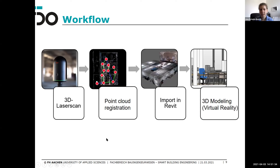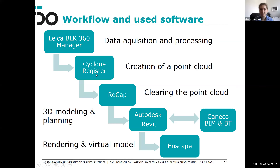Here you can see a short overview of the workflow we used. We used a Leica 3D laser scanner to scan all the rooms — the red dots indicate the positions where we placed the scanner throughout the rooms. That data was used to create a so-called point cloud, which was then imported into Revit, and later the 3D model was created in virtual reality. For the software overview: we started with the Leica BLK 360 Manager for data acquisition and processing. In the next step we used Cyclone Register to create the point cloud, combining all photographs captured by the camera and scanner.